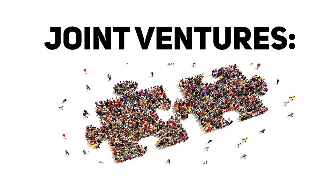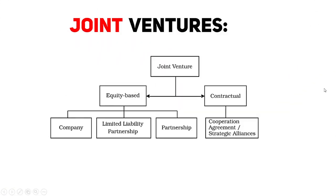Moving on to the next topic: joint venture. A joint venture is a business organization - it is simply joining hands with another business. When two businesses join together for a common purpose or mutual benefit, it is called a joint venture. Joint venture has two major divisions: equity-based and contractual joint venture. Equity-based is further divided into three groups: company, LLP (Limited Liability Partnership), and partnership. Contractual joint venture is divided into operational agreements or strategic alliances.